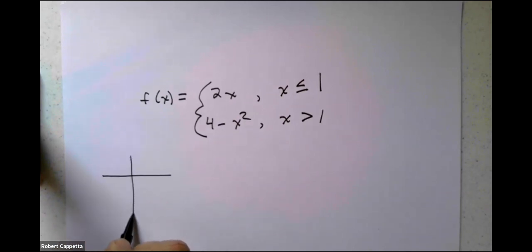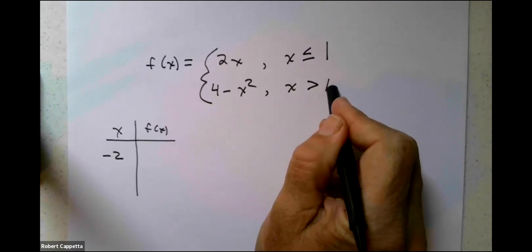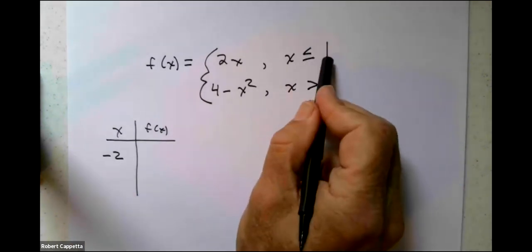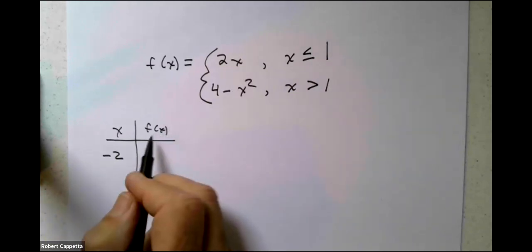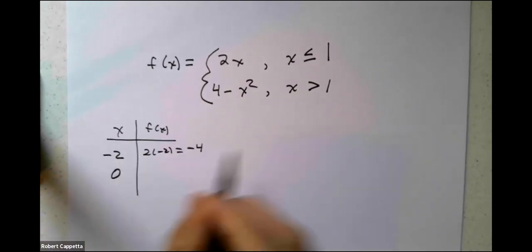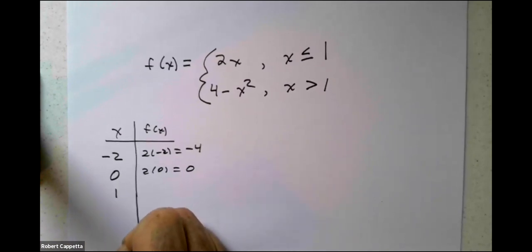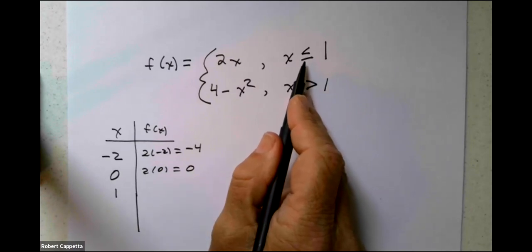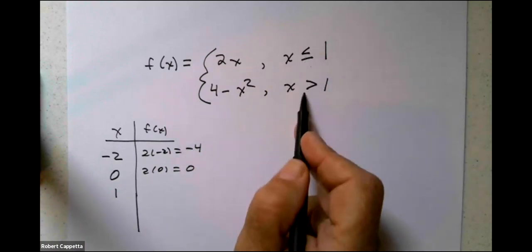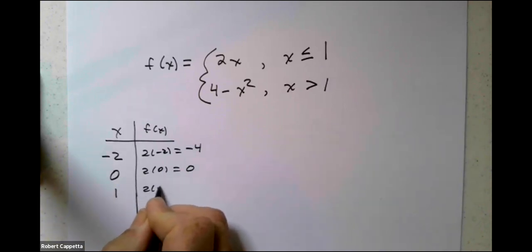If I want to know what I get when x equals negative 2, I've got to decide which branch of the function I'm on — x less than or equal to 1, or x greater than 1. Negative 2 tells us x is less than or equal to 1, so I use this branch: f(x) is 2 times x, so 2 times negative 2 is negative 4. If I'm at 0, still on this branch: 2 times 0 is 0. If I get to 1, still on this branch: 2 times 1 is 2.